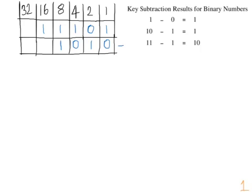We are going to have a look at these two binary numbers for subtraction. We have our first binary number 1 1 1 0 1, take away 1 0 1 0. When we have this one take away this zero, we are still left with a one.